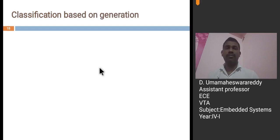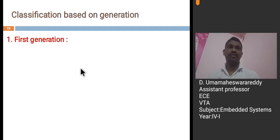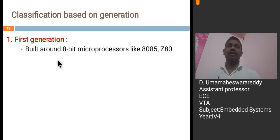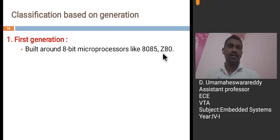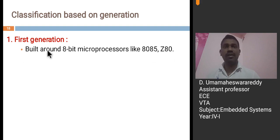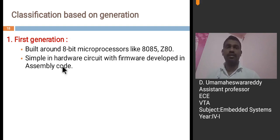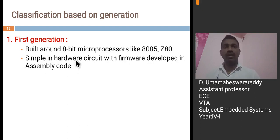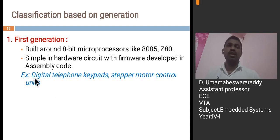Coming to based on the generation, the first generation embedded systems are built around 8-bit microprocessors like 8085 and Z80 microprocessors. These are simple in hardware circuit and very simple to implement. The firmware is developed in assembly code. For example, digital telephone keypads and stepper motor control units come under the first generation embedded systems.